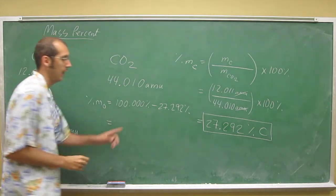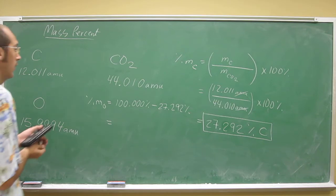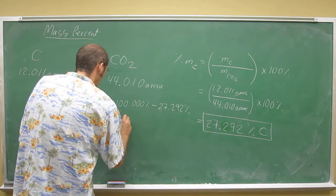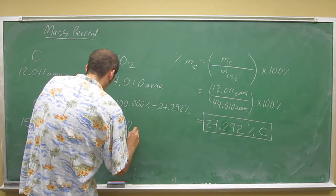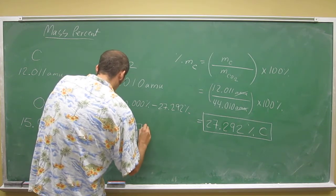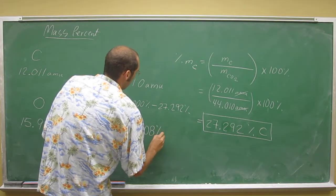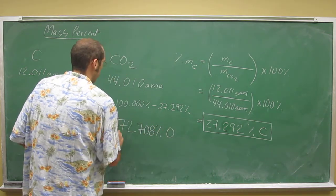You would expect that it would be the higher value, both because oxygen is heavier and there's more of them. And that's going to give you the answer of 72.708% oxygen in carbon dioxide.